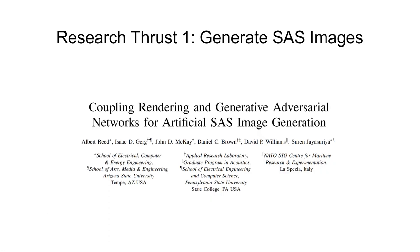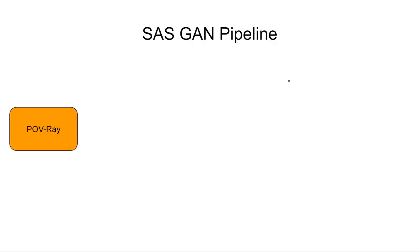The first thrust uses a hybrid pipeline of an optical renderer and a generative adversarial network to create realistic-looking SAS imagery, which could potentially be used for data set augmentation. This work was published in MTS IEEE Oceans in 2019. In this paper, we utilize an open-source optical ray tracer called Povray to render SAS approximate images.